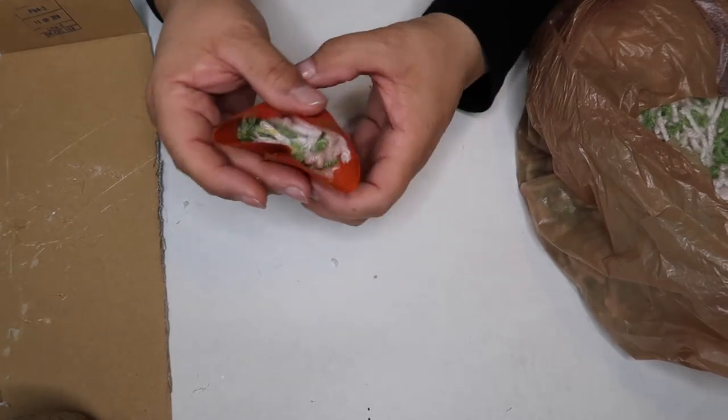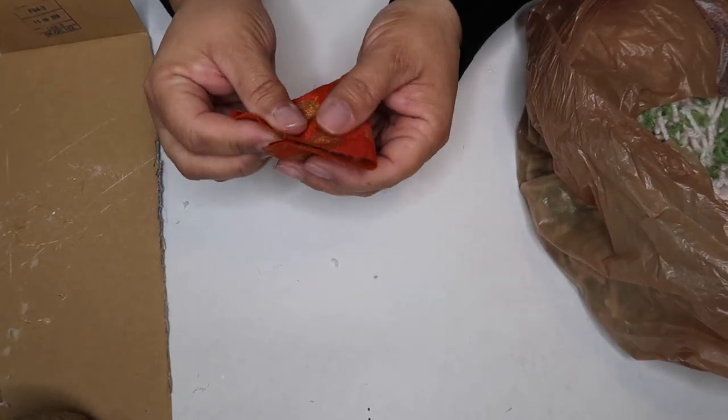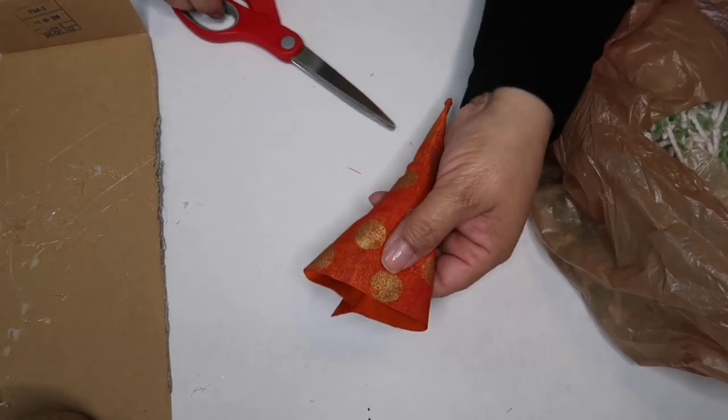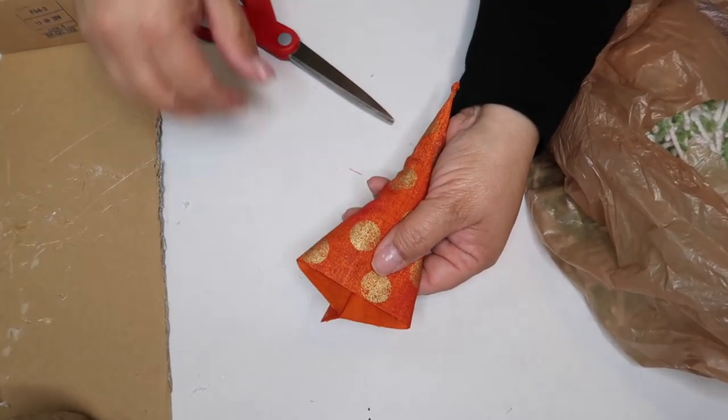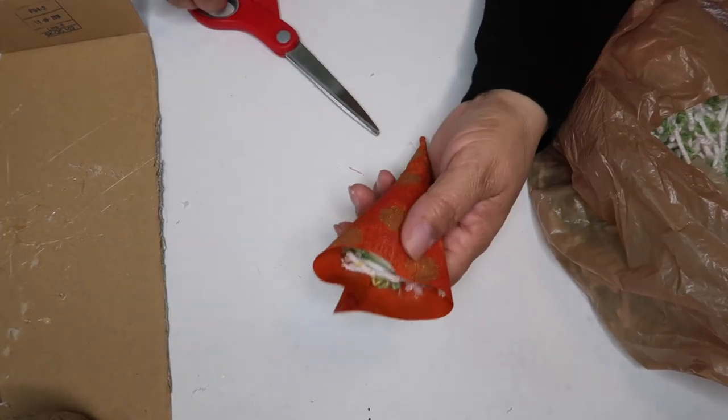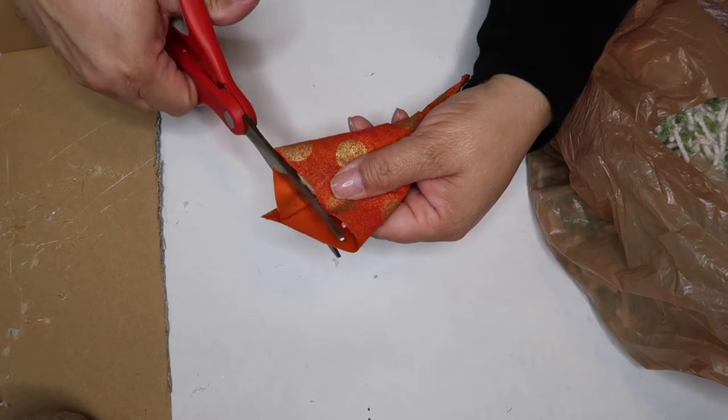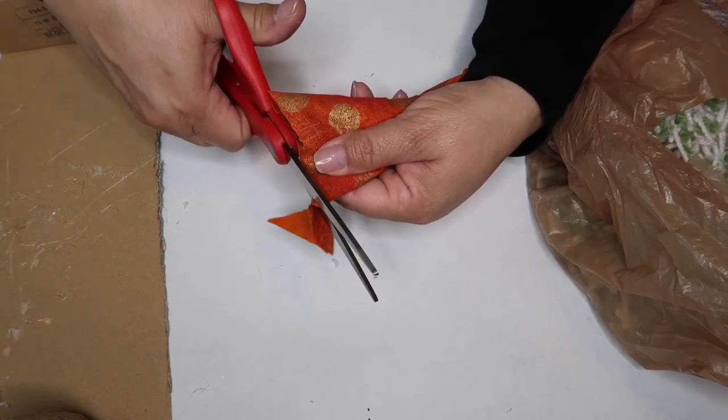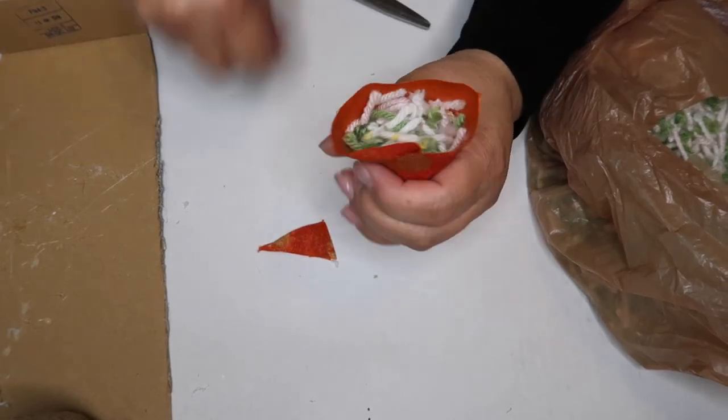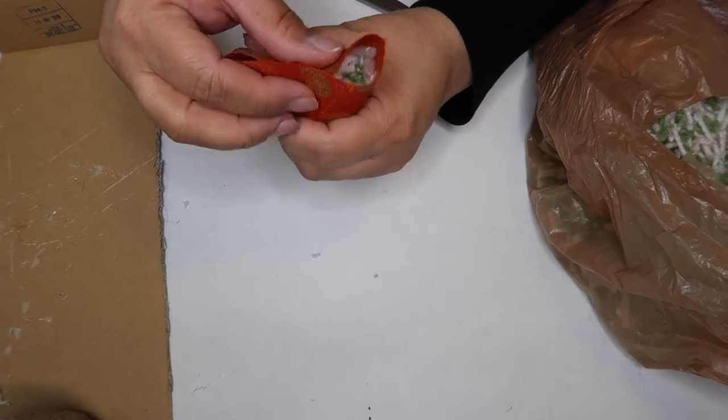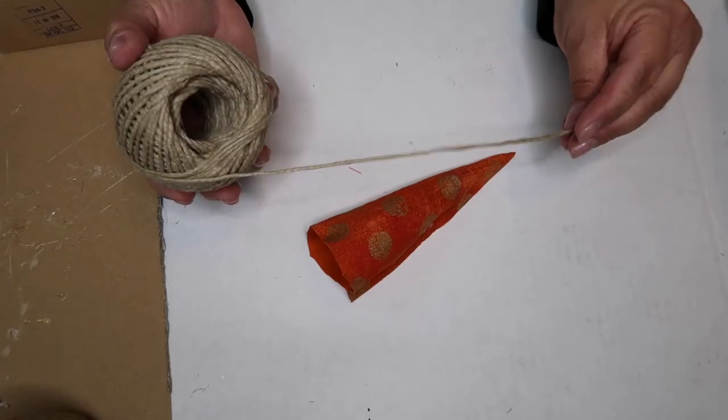Now I have it mostly stuffed, and I probably should have cut this beforehand, but we're gonna cut it now. See how it's not straight across? You can either tuck this in, which you could do, but I just cut it across and then I just shove that down in there too.